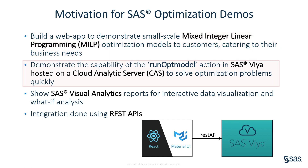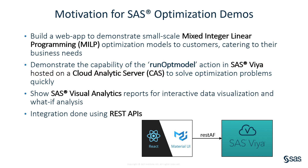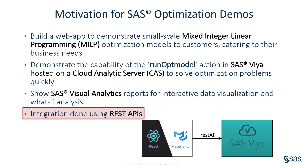We can demonstrate the capability of the run-opt model action in SaaS VIA hosted on a cloud analytics server, or CAS, and use that to solve optimization problems quickly. We also want to showcase some visual analytics reports so that the user can interactively visualize their data and do some what-if analysis.